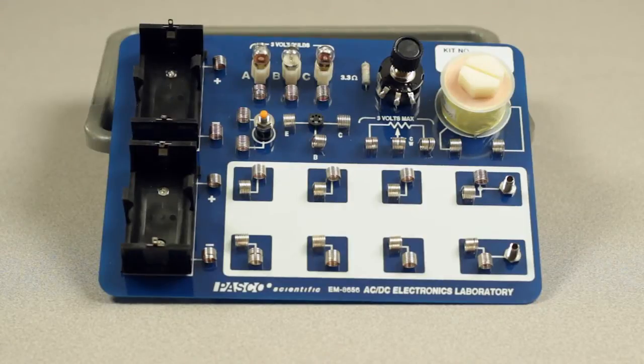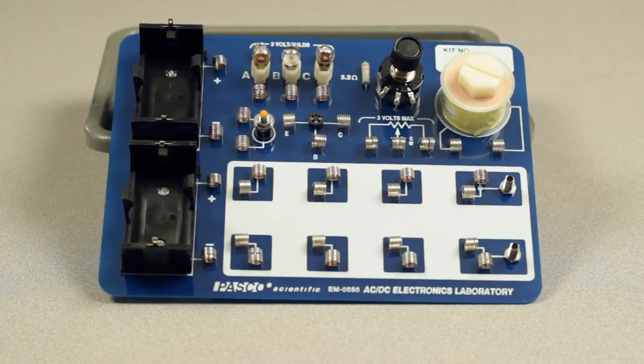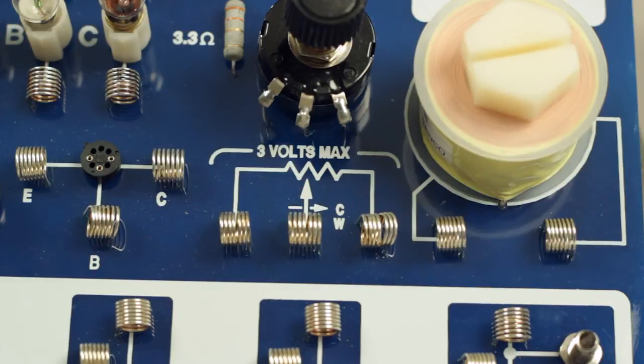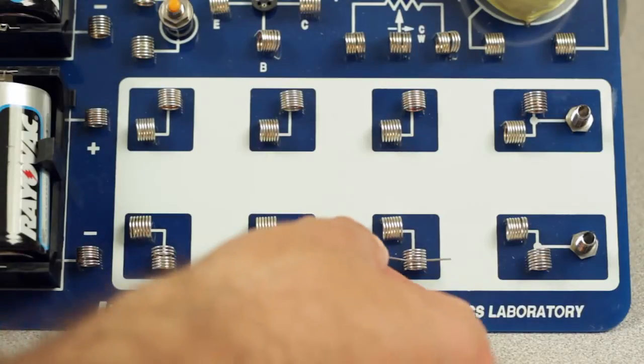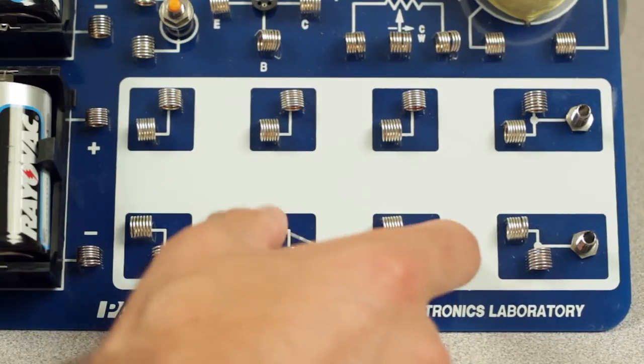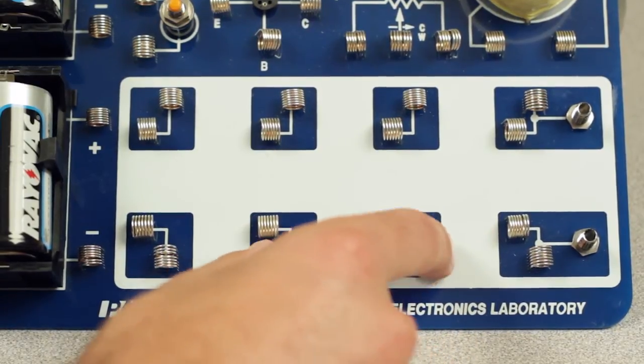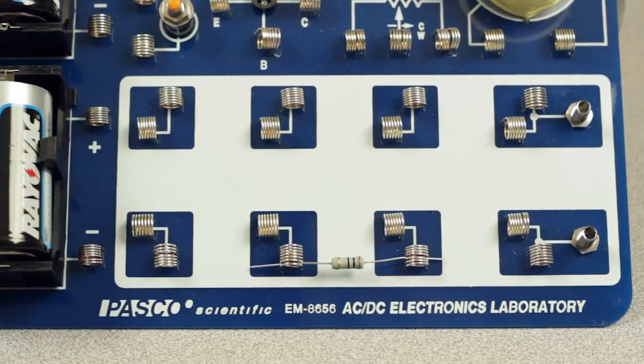Pay close attention to the printed outlines on the board which indicate what component springs are already electrically connected to devices on the board like the potentiometer or battery holders. In the outlined experiment area, the component springs are connected in pairs oriented perpendicular to each other to help facilitate the easy connection of various types of circuits.